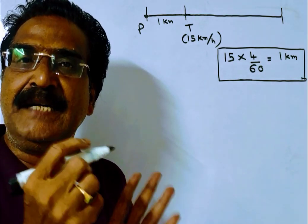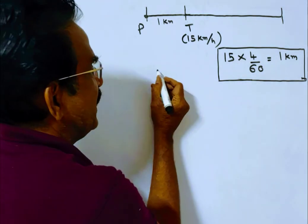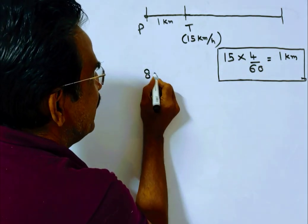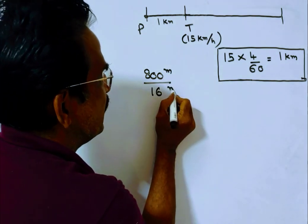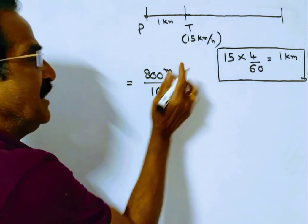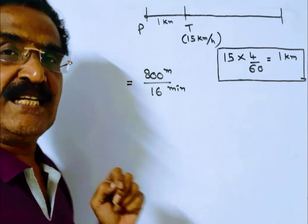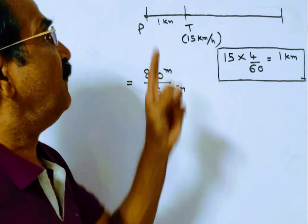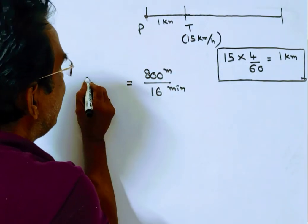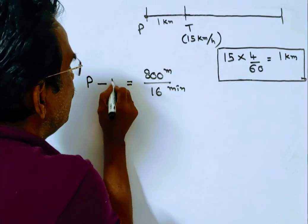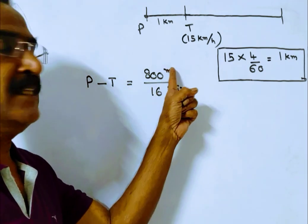That means 800 meters was covered in 16 minutes. This distance divided by time gives us the relative velocity of the police and thief. They are traveling in the same direction, so we calculate P minus T.